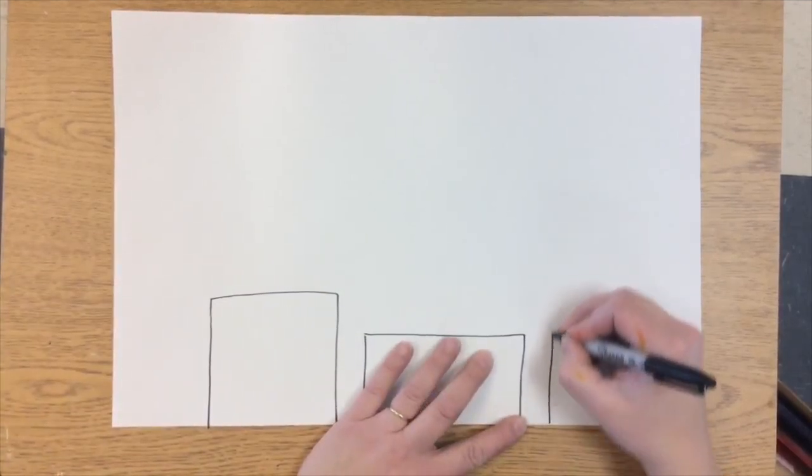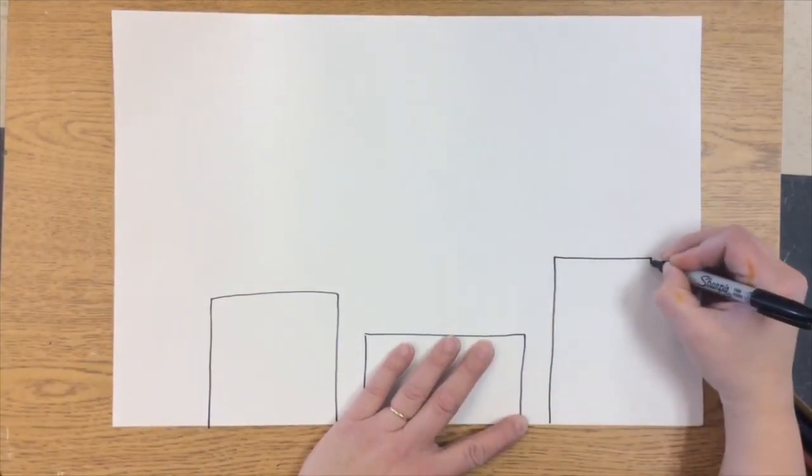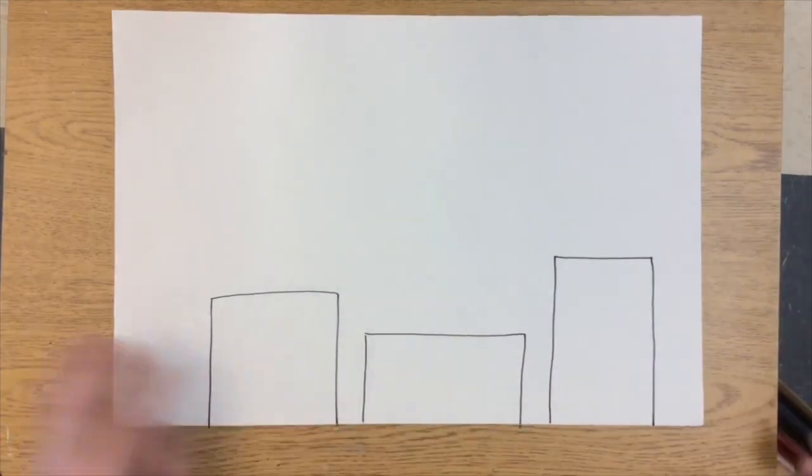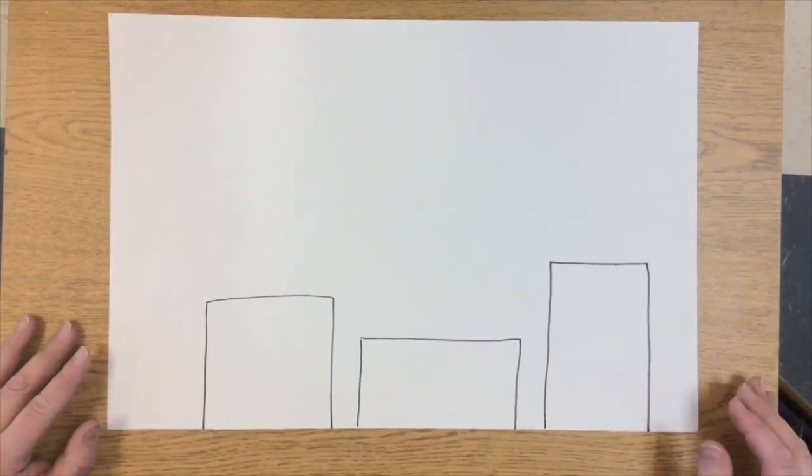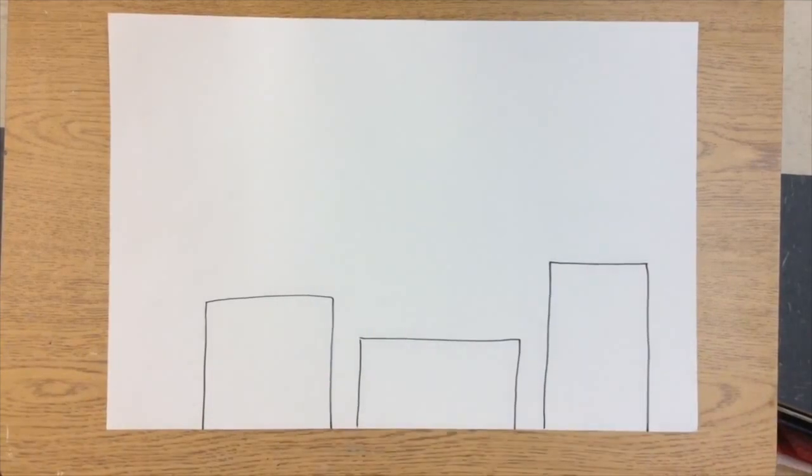I'm just going to start off with three smallish rectangles that fill my paper like that. Why don't you go ahead and start off with three smallish rectangles.